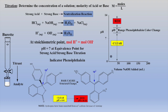If a strong acid is titrated with a strong base, a big change in pH will occur near the equivalence point. In other words, just a single drop of titrant will cause a change of several pH units. This can be seen on this pH curve, where a strong base is being added to a strong acid and the pH is recorded.